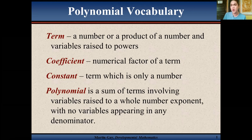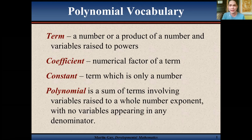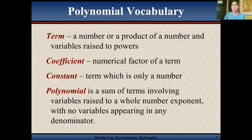There must be no variable in your denominator for it to be considered a polynomial. Also, there must be no fractional exponent on your variable. Another thing: there must be no variable inside a radical — we call it a radicand. There must be no variable in the radicand to consider an expression as a polynomial. Remember that.